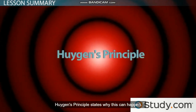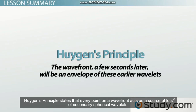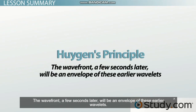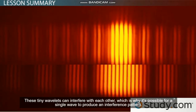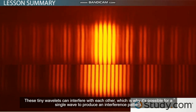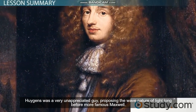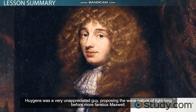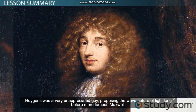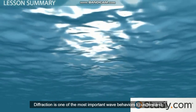Huygens' principle states why this can happen: every point on a wavefront acts as a source of lots of secondary spherical wavelets. The wavefront a few moments later will be an envelope of these earlier wavelets. These tiny wavelets can interfere with each other, which is why it's possible for a single wave to produce an interference pattern. Huygens was a very underappreciated physicist, proposing the wave nature of light long before the more famous Maxwell.